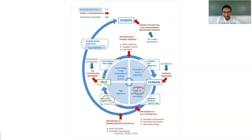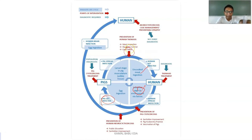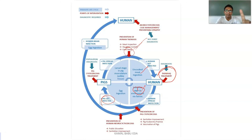Eggs consumed by pigs lead to larval stages that settle in edible tissues. Points of intervention to prevent human infection include: meat inspection before consumption, slaughter control, and proper cooking of meat. If infection is diagnosed early, treating the person with the correct antibiotic can prevent further spread of eggs into the environment through proper teniasis treatment.